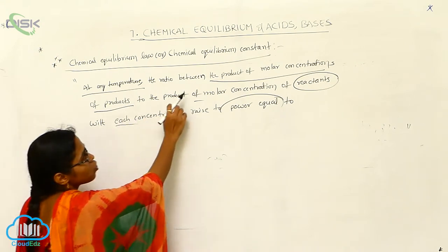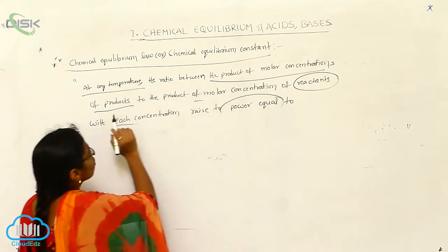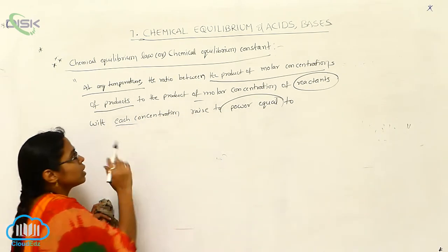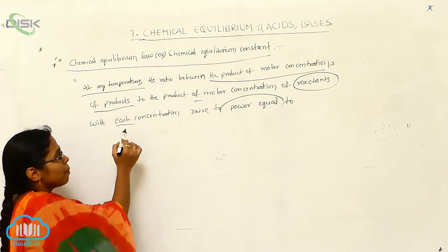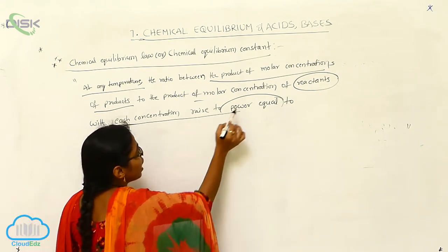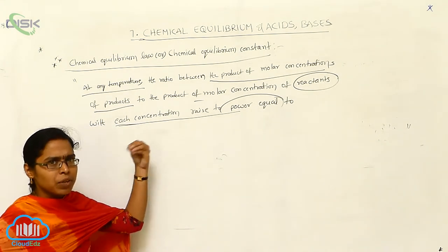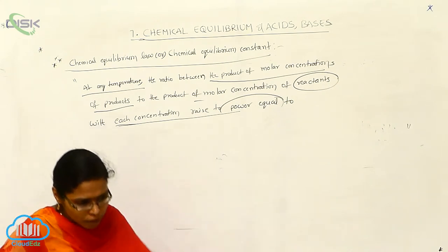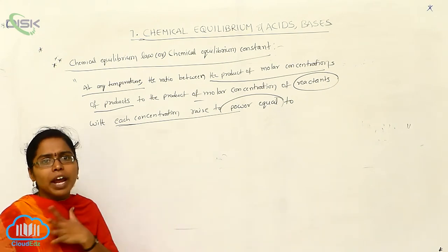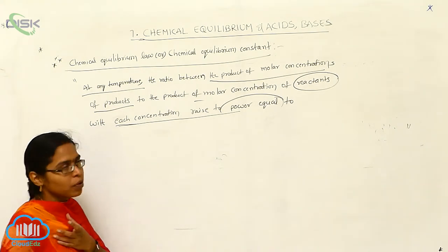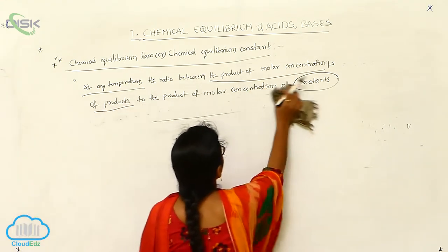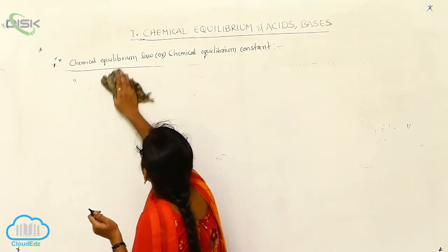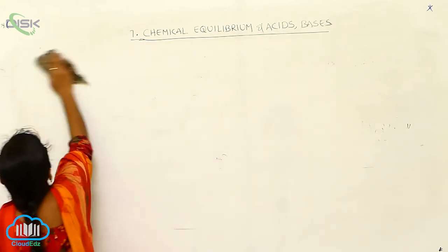Simply, the ratio between the concentration of products divided by the concentration of reactants is called chemical equilibrium. Based upon chemical equilibrium, two constants exist: Kp and Kc. Now we have to discuss the relationship between Kp and Kc, which is important for exam questions.